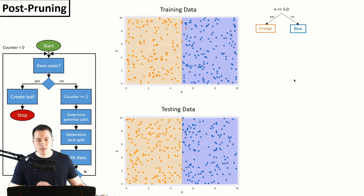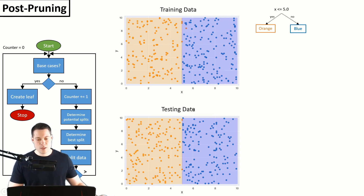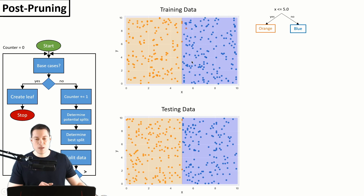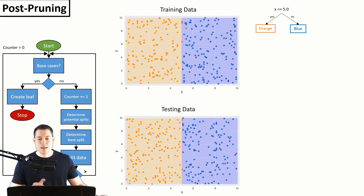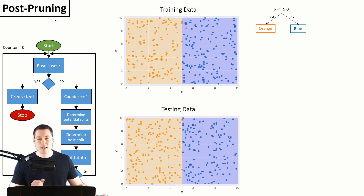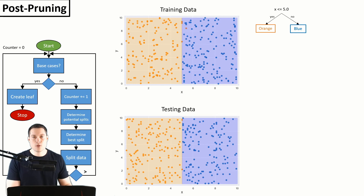This is what the tree looks like after post-pruning — and as you can see, it's the same tree we got when there was no outlier in the training data. This tree now predicts all testing data points correctly and can generalize well to new unseen data, even with the outlier in training. That wraps up this video. If you want to know how to implement post-pruning from scratch in code, check out my next video. Thanks for watching!